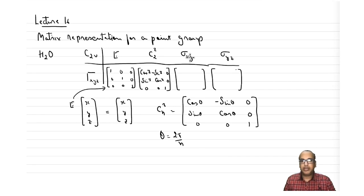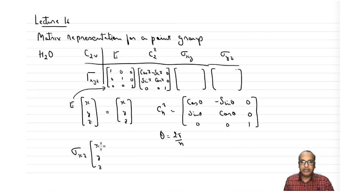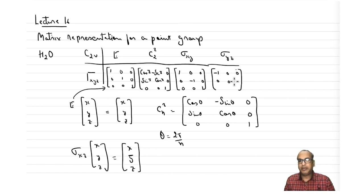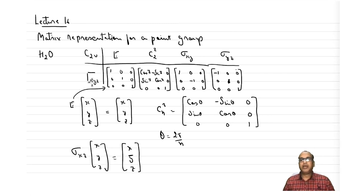For σ(xz), only y changes sign. So applying σ(xz) to xyz gives x, −y, z. The matrix is: 1, 0, 0 / 0, −1, 0 / 0, 0, 1. For σ(yz), x becomes negative, giving the matrix: −1, 0, 0 / 0, 1, 0 / 0, 0, 1.